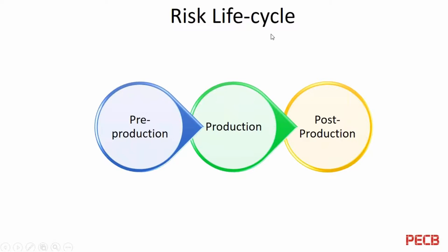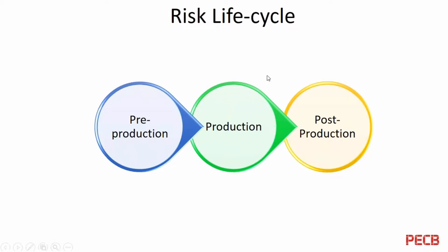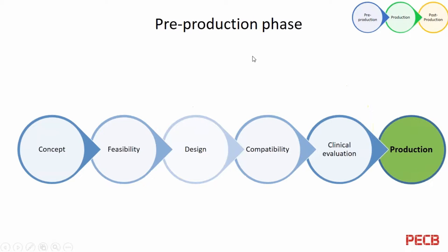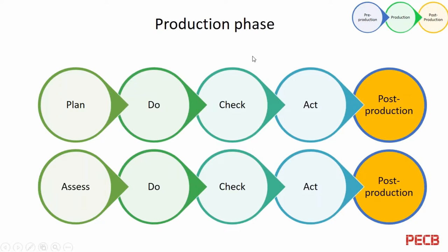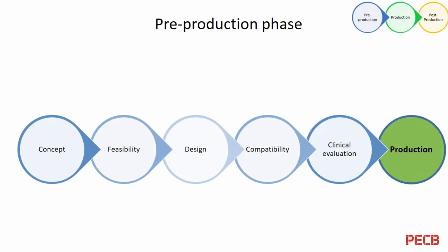The risk life cycle is the main point we need to stress during this presentation. It consists of a pre-production phase, production phase, and post-production phase. We will cascade through them one by one. Pre-production phase starts from the conceptual point of view — thinking about the product — then the feasibility study, where we need to address all risks about the patient who will be using this, the physician, and all associated personnel who will come nearby or might be affected by the product.